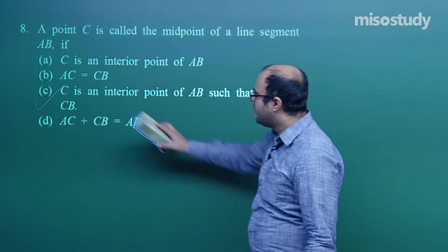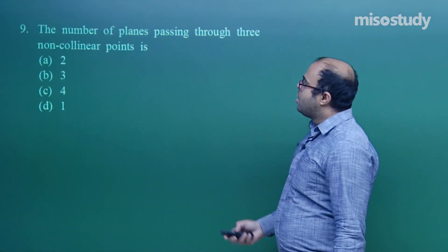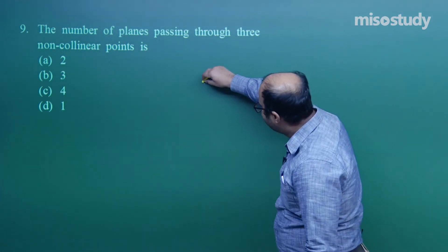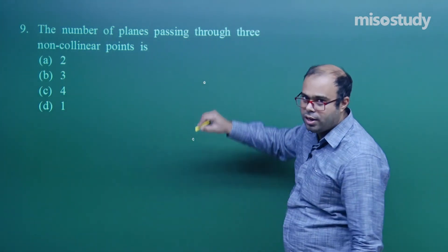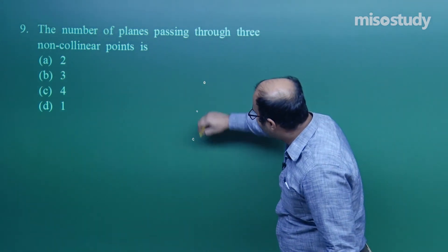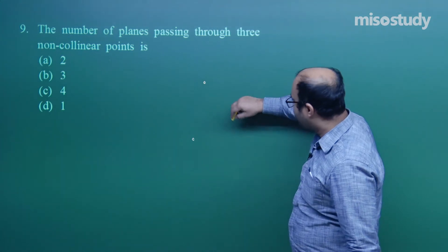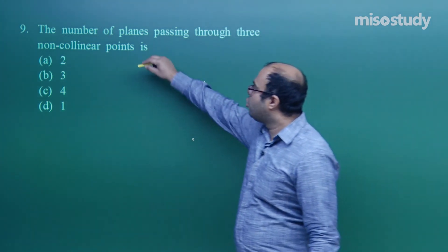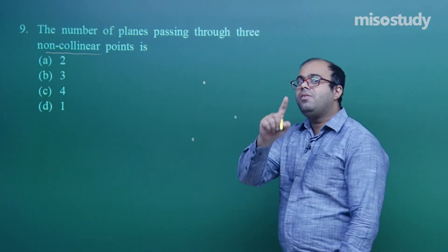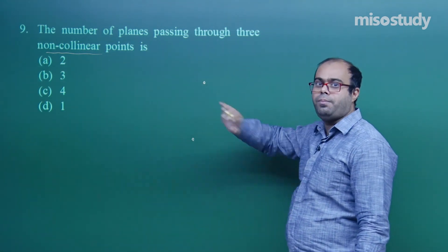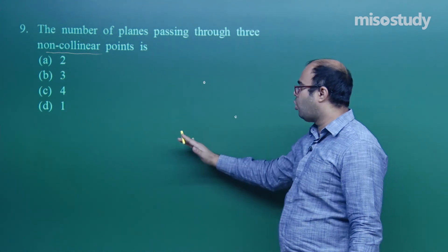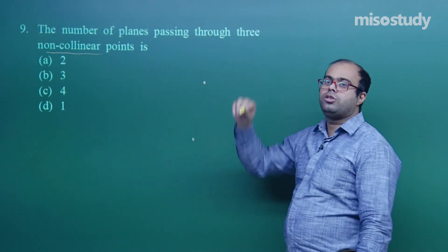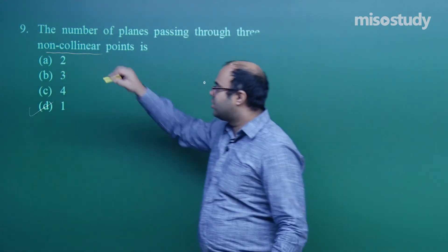Question nine: the number of planes passing through three non-collinear points is how many? Non-collinear means the points do not lie on the same line. If we take three such points, only one plane can pass through all three of them — like this blackboard itself. Any other plane orientation passes through only two of the three points but not all three. So the answer is 1.